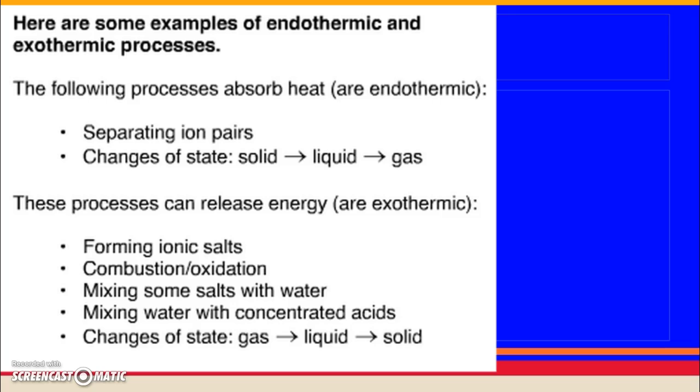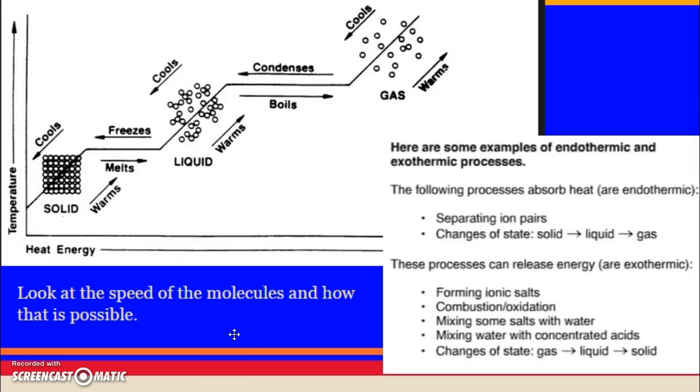Here are some other examples. The following processes absorb heat, so this is endo: separating ion pairs and changing state from solid to liquid to gas. These processes release energy or exothermic: forming ionic salts, combustion, oxidation, mixing some salts with water, mixing water with concentrated acids, changes of state from gas to liquid to solid. On this slide, the only one that I expect you to know is the combustion and oxidation and the phase changes, which are physical, but they still are endo or exothermic.